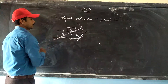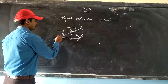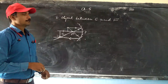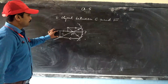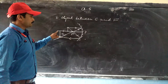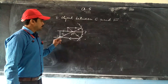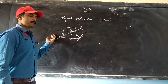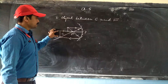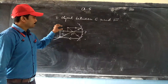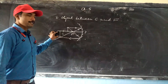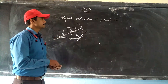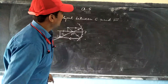After reflection, we can see the position of the image, which is forming beyond the center of curvature. The size of the image is bigger than the object, and the nature is real and inverted.